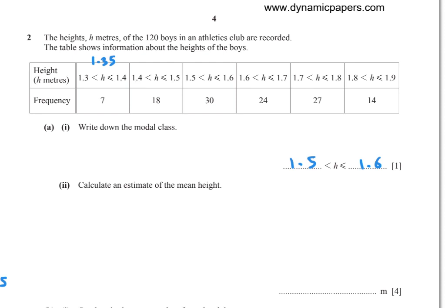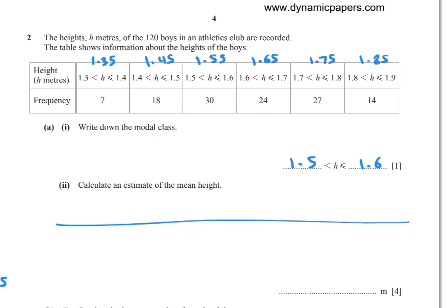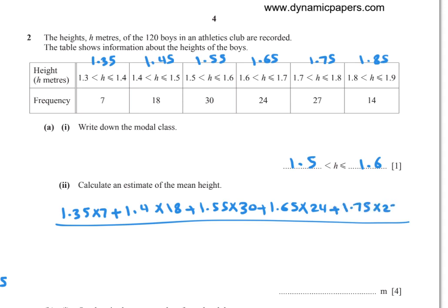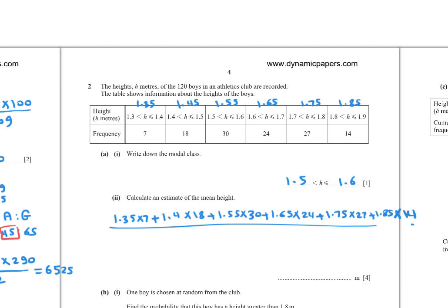The middle values for each class are 1.45, 1.55, 1.65, 1.75, and 1.85. Multiply each middle value by its frequency: 1.45 times 18, 1.55 times 30, 1.65 times 24, 1.75 times 27, and 1.85 times 14. Divide by total frequency 120, equals 1.62 to 3 significant figures.